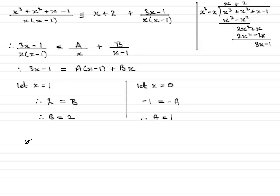So, therefore, what we've got is our fraction up here, x cubed plus x squared plus x minus 1, all divided by x bracket x minus 1, can be written then in partial fractions as x plus 2.